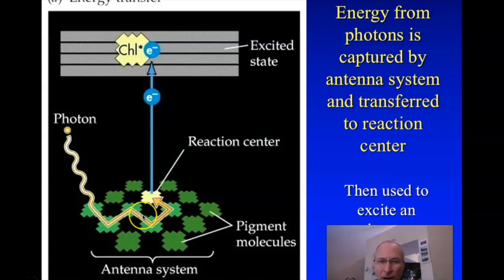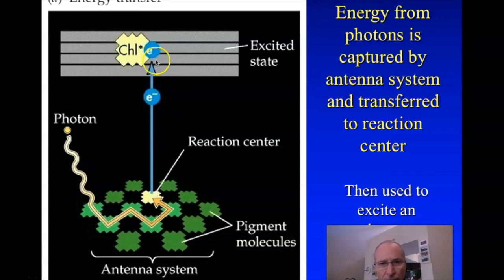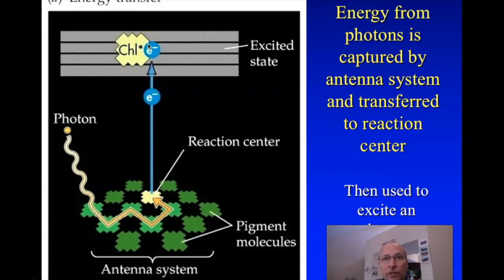There's a lot going on here. This antenna system embedded in the thylakoid membrane has a transition state that allows the excited electron to move to a particular center — what we call the reaction center of that antenna system. It's that electron that ultimately drives the light-dependent reactions. Once the electron is in a higher energy state, it can then go through electron transport, just like we saw in the mitochondrion.